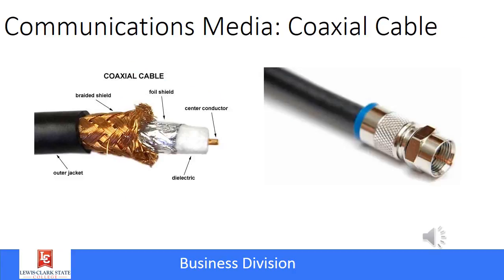Another communication wiring system you'll see is coax cable, and you should be fairly familiar with this if you have ever hooked up your television to a cable or to a satellite. With coax cable, you have a single insulated wire, and then you have shielding around it.